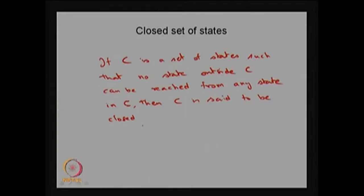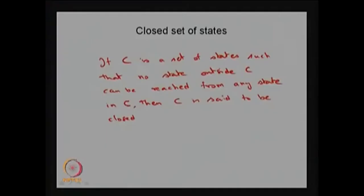We can combine the class property with the closed set property. If both properties are satisfied — the states communicate with each other as well as the closed property is satisfied — then we can say that it is a closed communicating class. Any subset in the state space S, if each element within the set communicates with each other and satisfies the closed property, then that collection is going to be a closed communicating class.